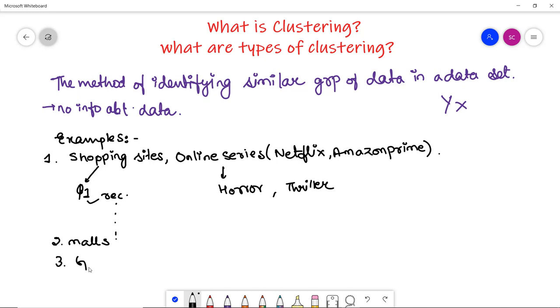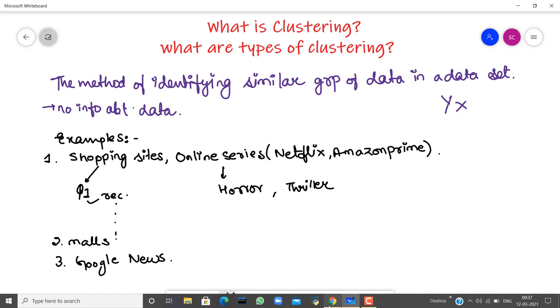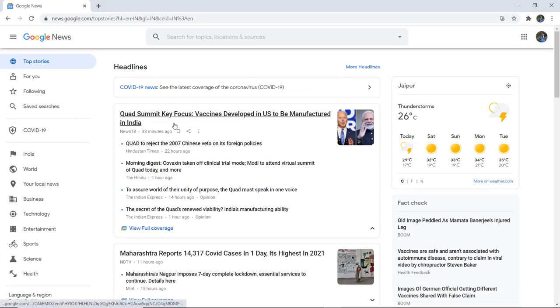Third example could be Google News. Whenever you open Google News to search about any particular news, there are several news channels which are covering those particular news, so they are made into a particular cluster. For example, Quad Summit key focuses vaccine developed in US to be manufactured in India - this particular news is covered by News 18, Hindustan Times, the Hindu, and the Indian Express. So this creates a particular cluster of the same news which has been generated by various news channels.